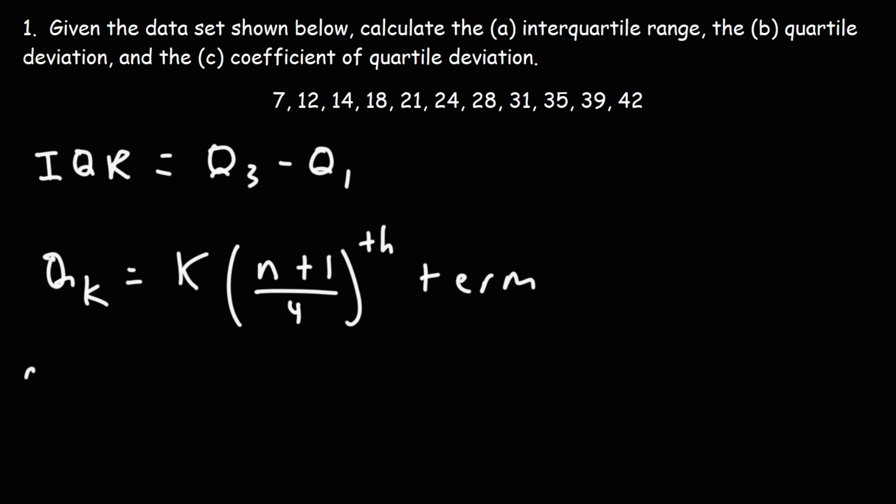So looking for the first quartile, K is 1. So looking for Q1. So it's going to be 1 times N is the number of terms. We have 1, 2, 3, 4, 5, 6, 7, 8, 9, 10, 11. 11 terms, so N is 11.